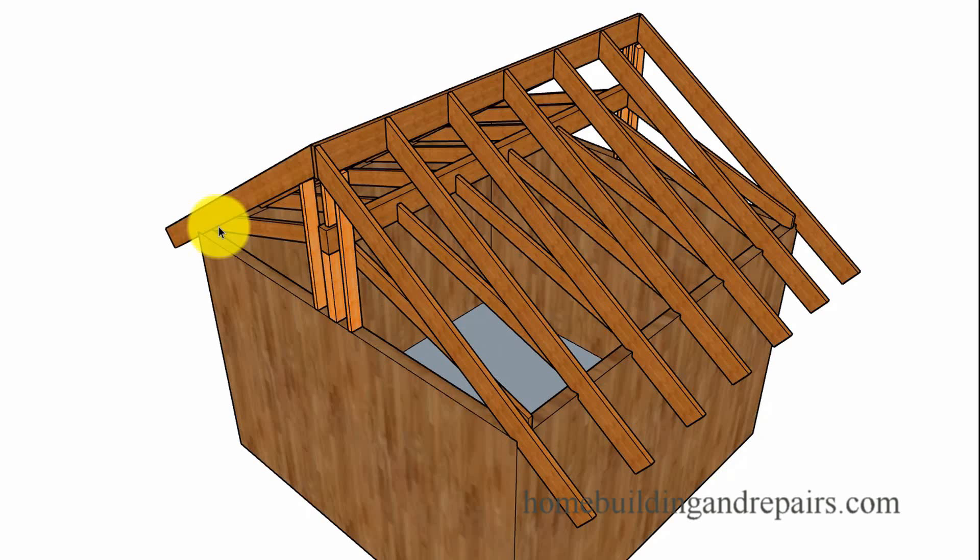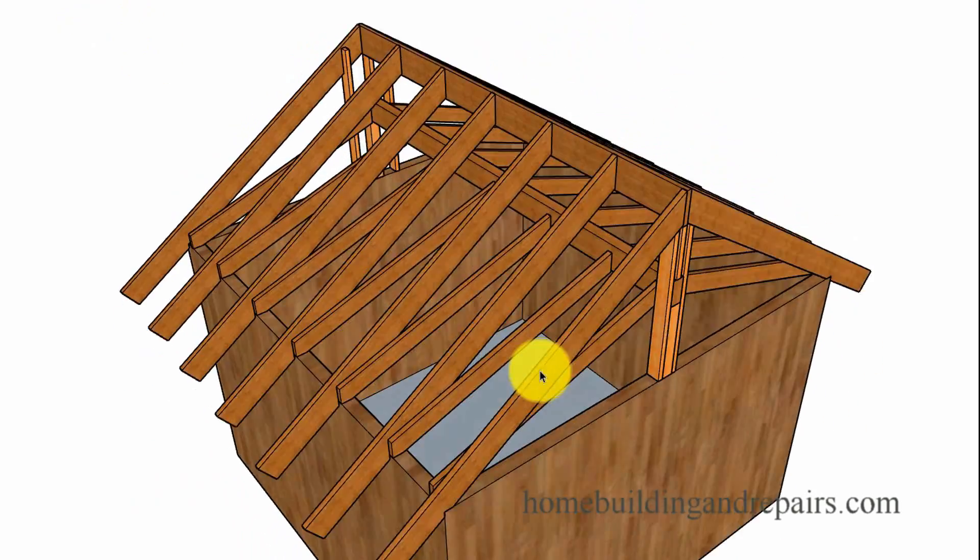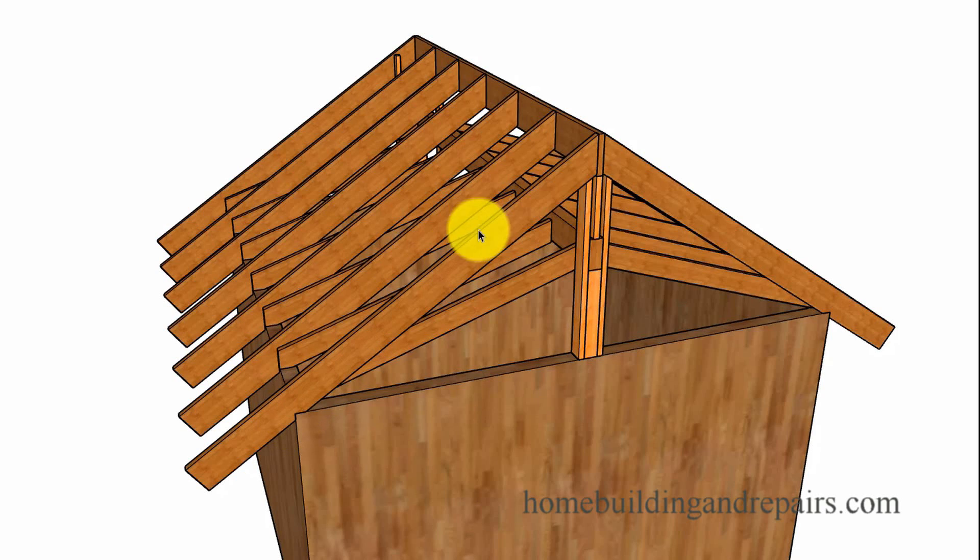Remember, we're going to have a cathedral ceiling, so we're going to need some type of supporting beam since we're not going to be using rafter ties. So here we go: 2x8s on the top, 2x8 rafters, 2x6 ceiling joists.